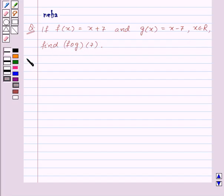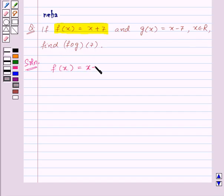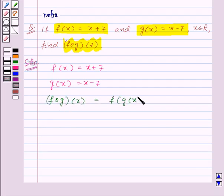Let's see its solution. In the question we are given that f(x) is equal to x plus 7 and g(x) is equal to x minus 7, and we need to find f of g of 7.